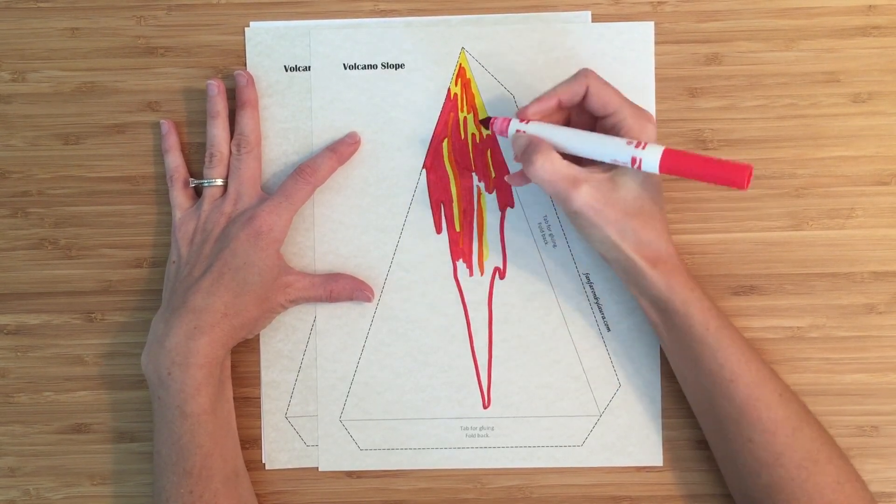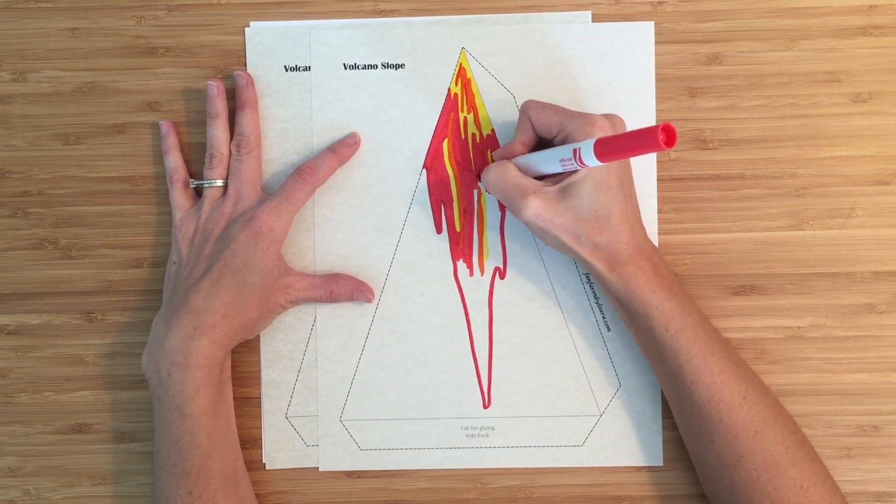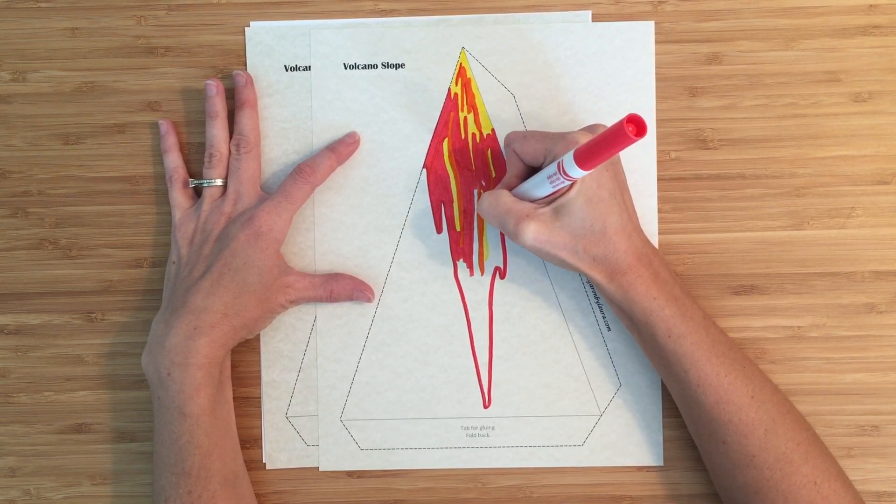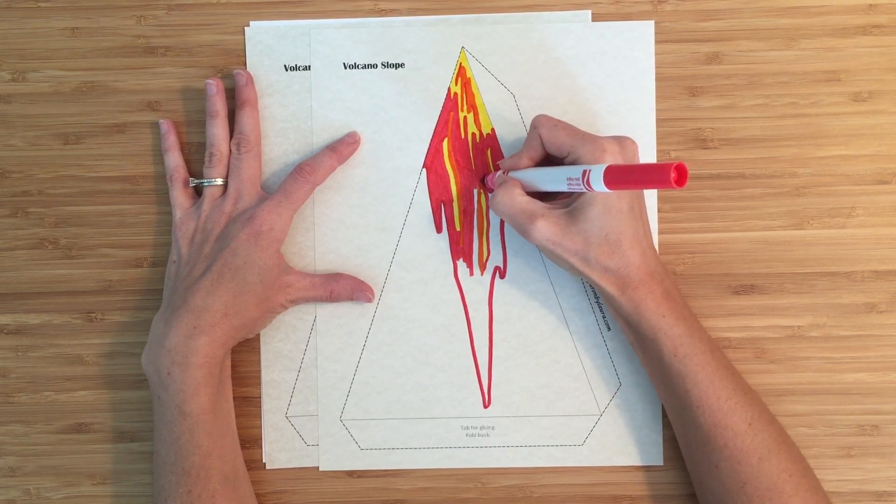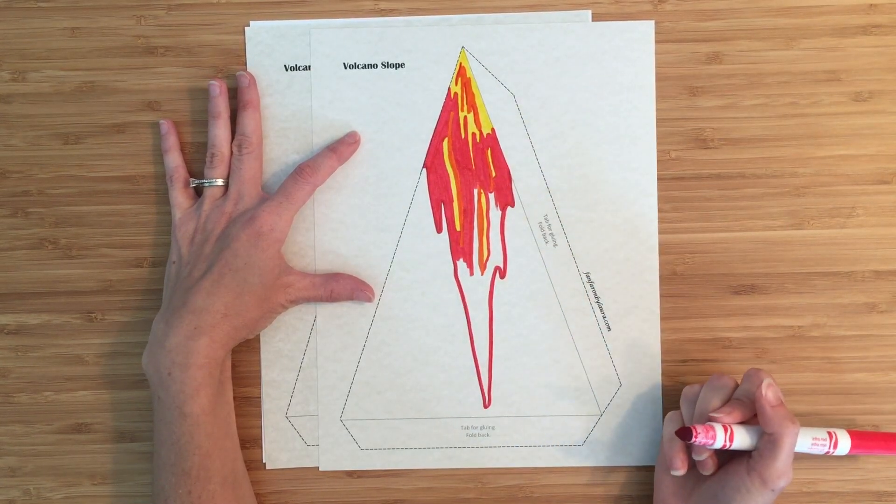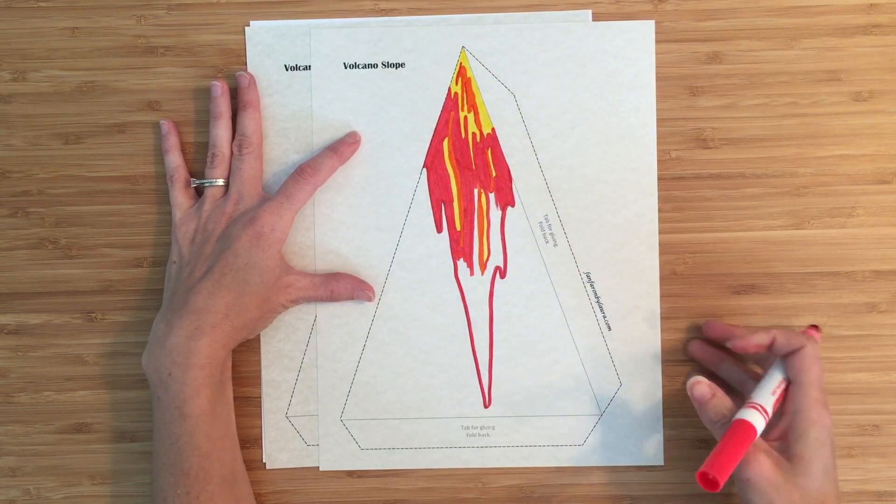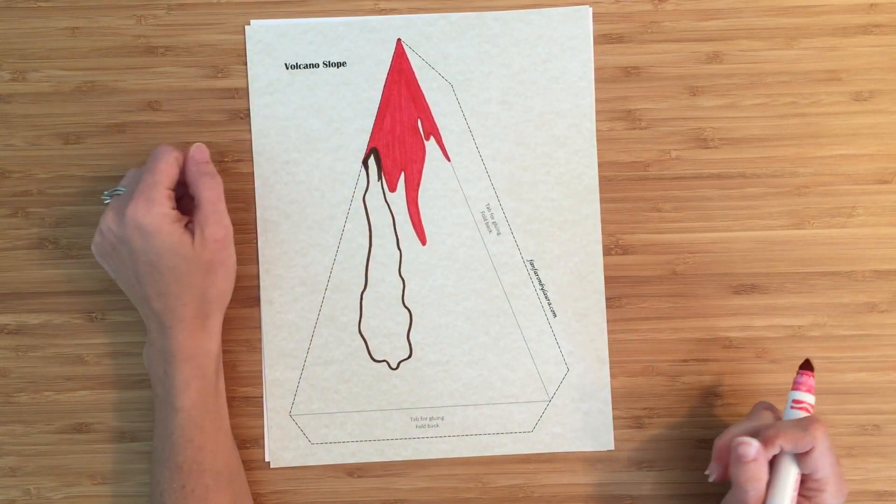As the lava cools, it starts to get darker so that it becomes like a darker red or reddish brown and eventually more black. So I was putting the hotter colors up at the top and I was going to do darker red down low. But maybe you don't want to add all the colors like I was doing on that side. You could just make it all red if you wanted to.